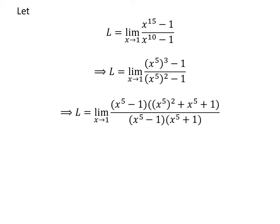Cube of x raised to the power of 5 minus 1 can be factorized as x raised to the power of 5 minus 1 times square of x raised to the power of 5 plus x raised to the power of 5 plus 1, and square of x raised to the power of 5 minus 1 can be factorized as x raised to the power of 5 minus 1 times x raised to the power of 5 plus 1.